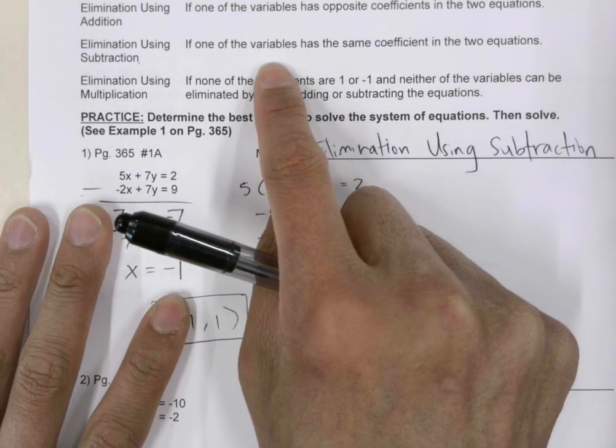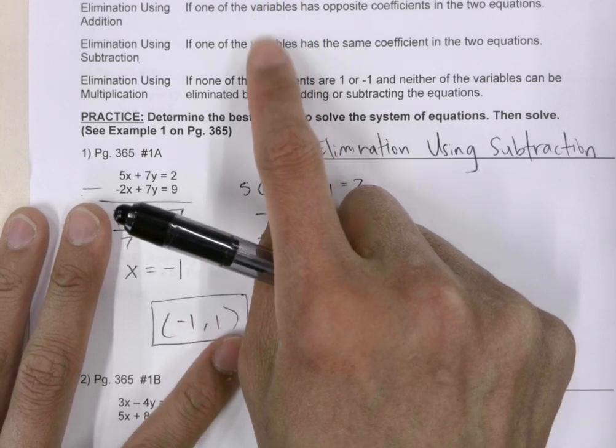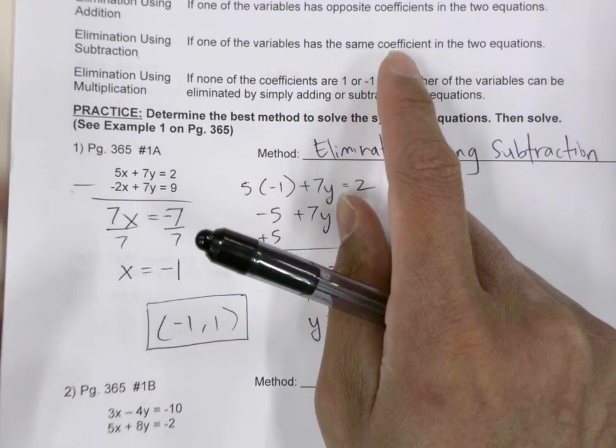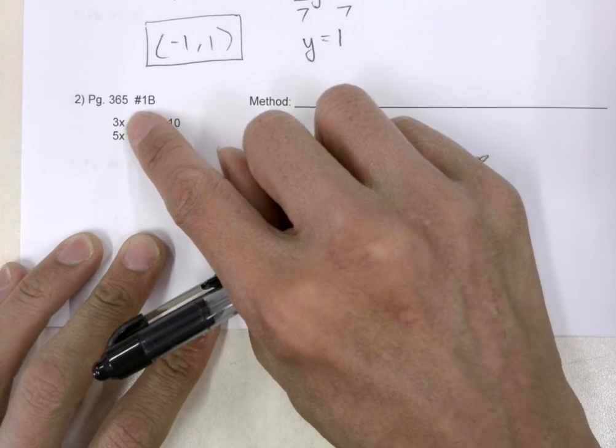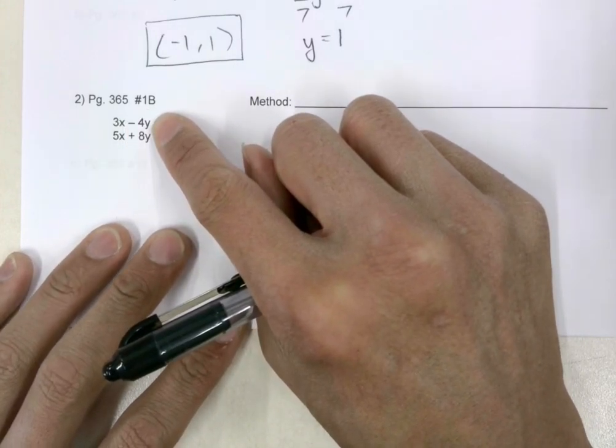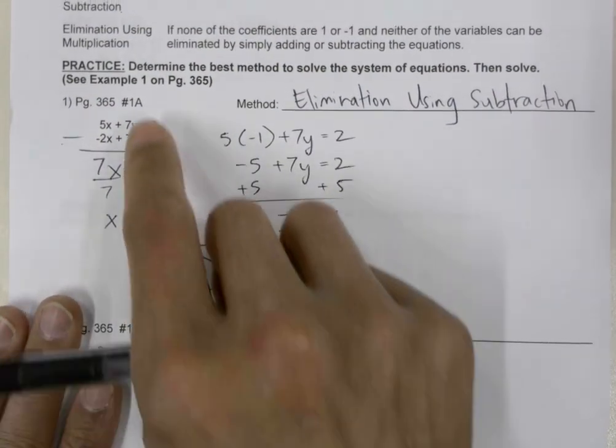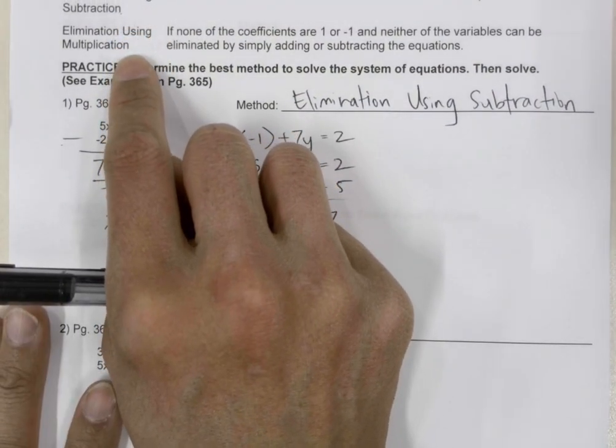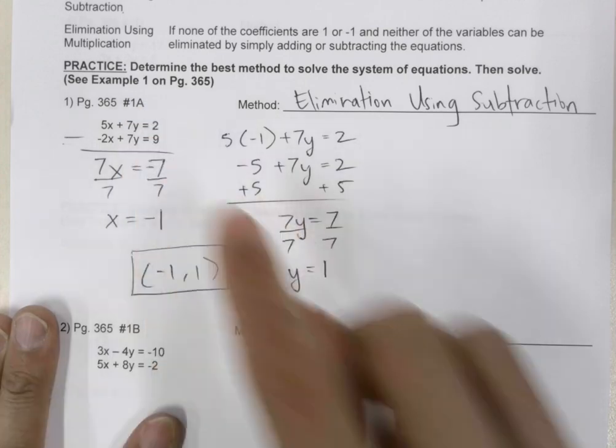Elimination using subtraction requires the variables to have the same coefficient in the two equations. Those are not the same coefficient. So that only leaves us with the last option, which is elimination using multiplication.